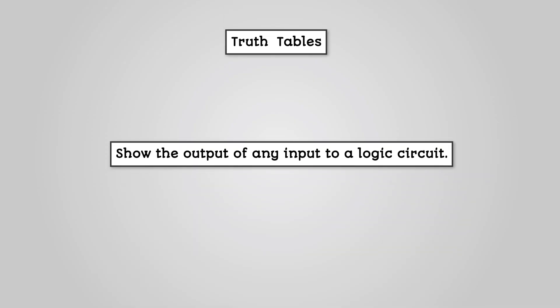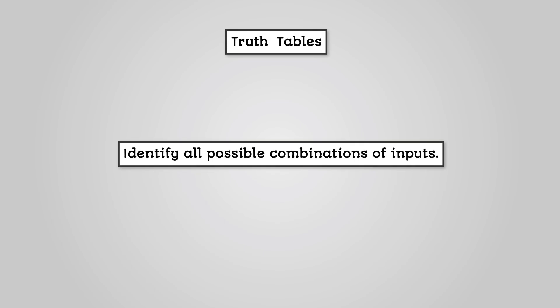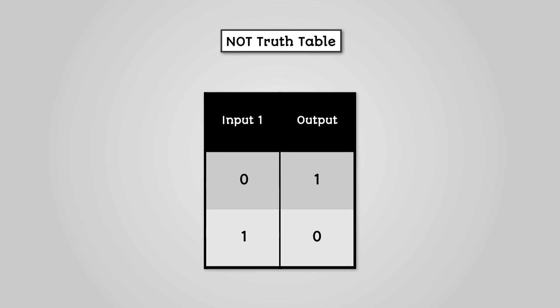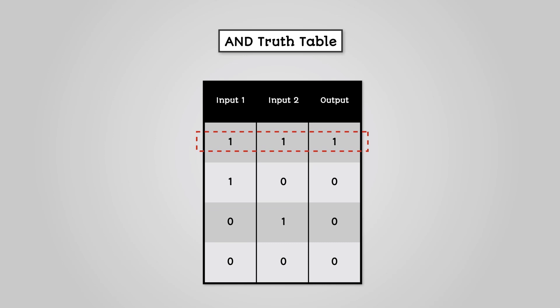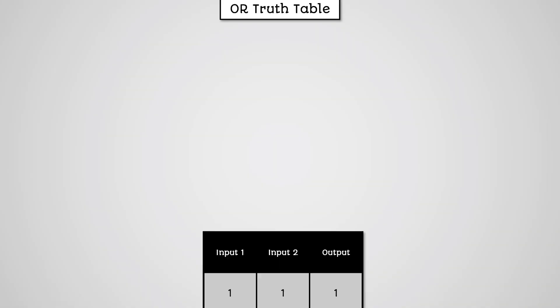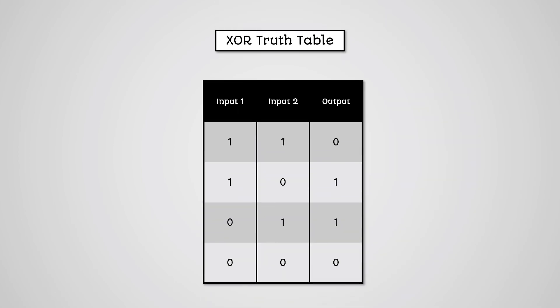So, truth tables are ways of summarizing the output of an input to a logic circuit. When completing a truth table, we should first identify all possible combinations of inputs. The output of a NOT truth table is the opposite of the input. The output of an AND truth table is 1 when both inputs are 1, otherwise it is 0. The output of an OR truth table is 0 when both inputs are 0, otherwise it is 1. The output of an exclusive OR truth table is 1 when one but not both inputs are 1, otherwise it is 0.